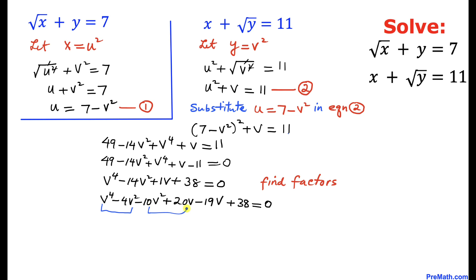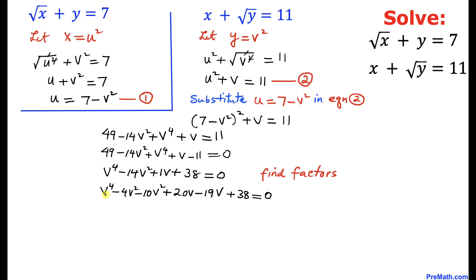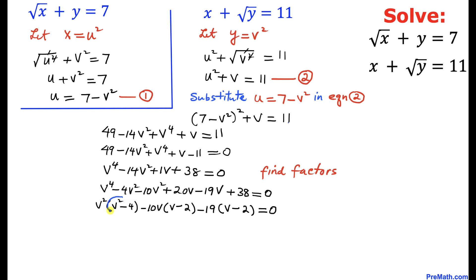Chunking these terms into pairs: from the first two terms, we factor out v squared, leaving v squared times (v squared minus 4). From the next two terms, we factor out negative 10v, leaving (v minus 2). From the last two terms, we factor out negative 19, leaving (v minus 2) equals 0.